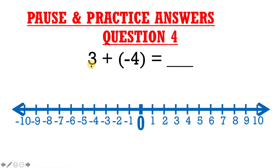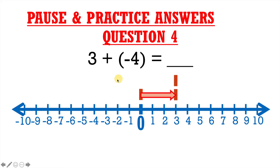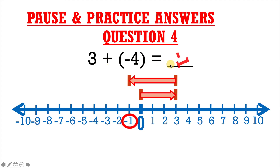Question 4: 3 plus negative 4 equals blank. Since we're using the arrow method, we're starting at 0 and putting a dash on 0. We draw an arrow to our starting point of 3 and place a dash over 3. Our second number is negative 4, so we draw an arrow traveling 4 spaces to the left — 1, 2, 3, 4 — and place a dash over our final answer, which is negative 1. Therefore, 3 plus negative 4 equals negative 1.